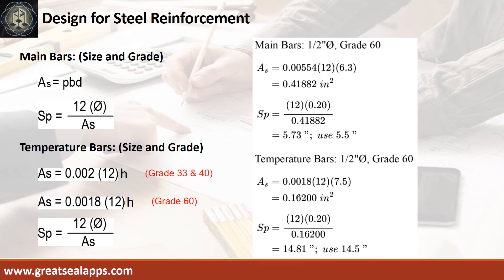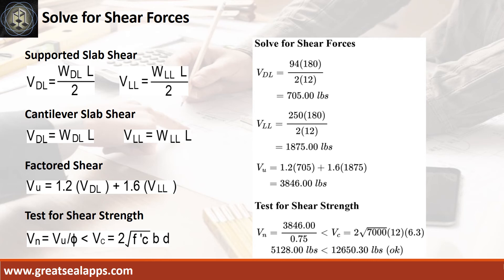The area of steel for temperature bar is 0.162 square inch, and the spacing for 1/2 inch diameter bar is 14.5 inches. The shear force for dead load is 705 pounds and live load is 1,875 pounds, for a maximum shear force of 3,846 pounds. The nominal shear force is 5,128 pounds, less than 12,650.3 pounds.